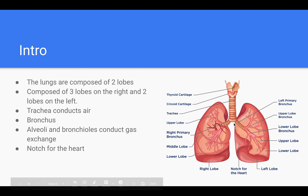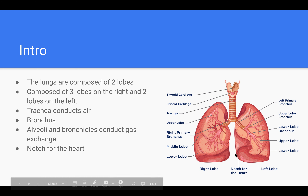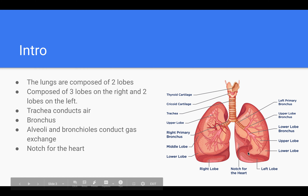As you can see, there is the trachea which conducts the air and leads it all the way to the bronchus — the right primary and left primary bronchus. Also not displayed in this picture, there are bronchioles and alveoli which conduct the gas exchange. On the left side, you can see there is a little space for the heart, and that is why the right side is bigger than the left.